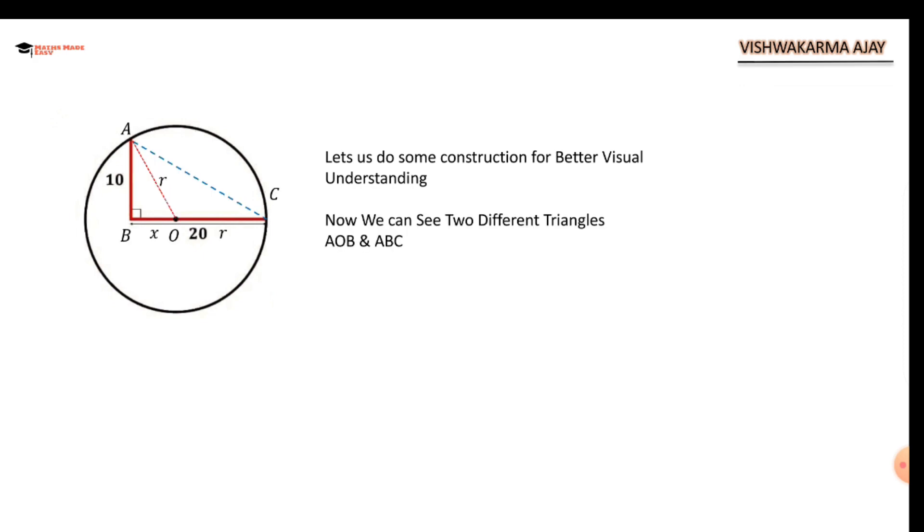I have named them accordingly. Since AO is directly coming from circumference to the center, it is named as R (radius). The rest is X + R, since O divides line segment BC in two different parts - this is X and this is R. But X + R is always equal to 20 as given in the question.